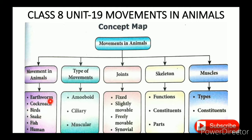Movement involves contraction and relaxation of muscles. A cockroach has six legs and four wings. Birds move by gliding and flapping. Snakes move by slithering. Fish use fins for movement. Humans also have their own mode of movement.